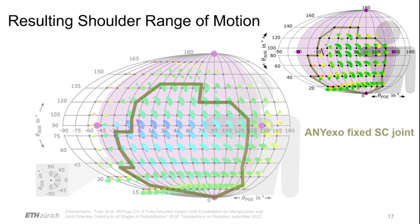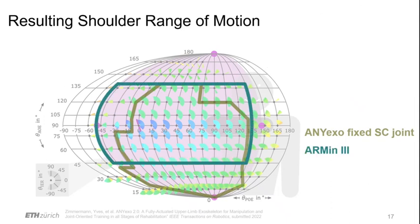Compared to not using the shoulder girdle here indicated with this brown line, and compared to the state-of-the-art devices like for example the ARMin III, the range of motion of ANYexo was substantially increased on the one hand by the kinematic design of the robot itself, but as well by incorporating the sternoclavicular joint into the movements.